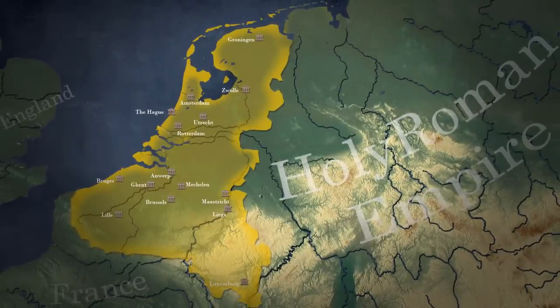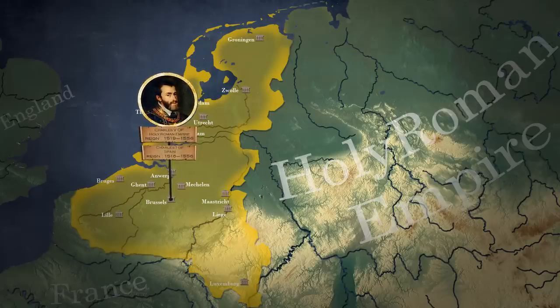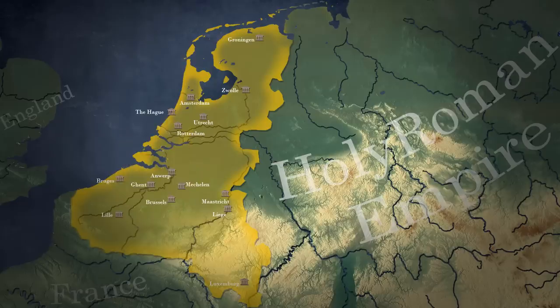The territories that would later form the Dutch Republic began as a loose federation known as the 17 Provinces, which Charles V, Holy Roman Emperor, also named Charles the First of Spain, inherited and brought under his direct rule in 1543. In 1566, a Protestant Dutch revolt broke out against rule by Roman Catholic Spain, sparking the 80 Years War.